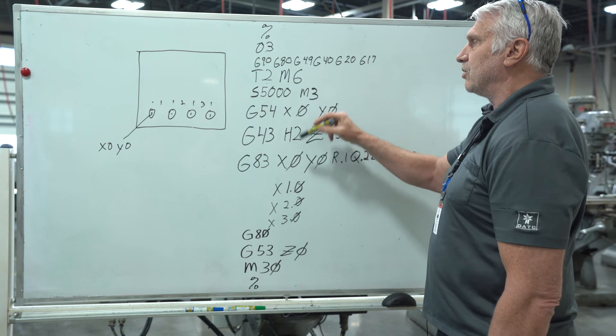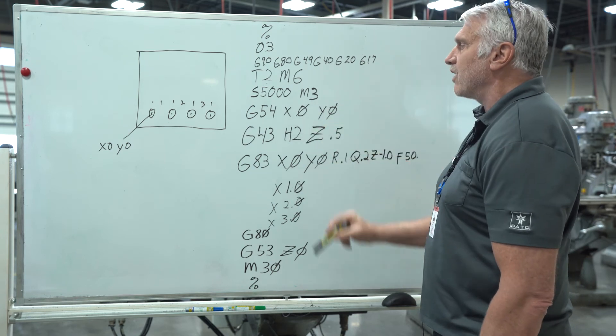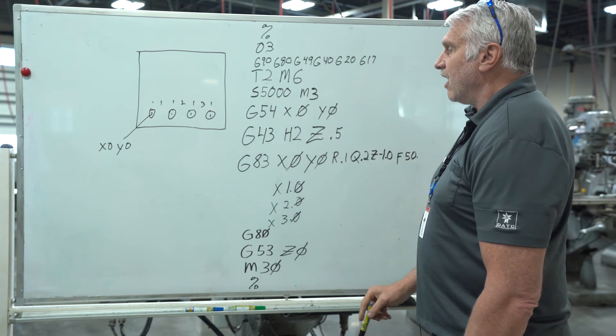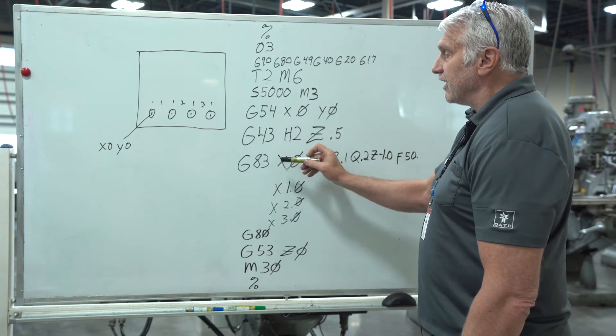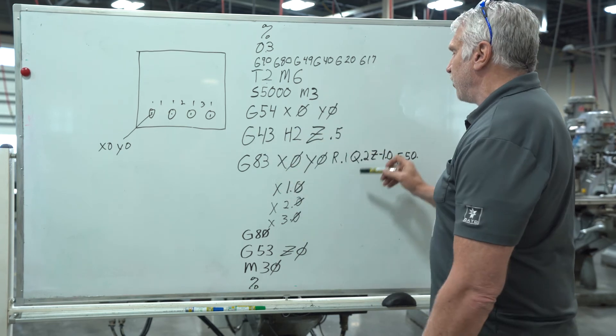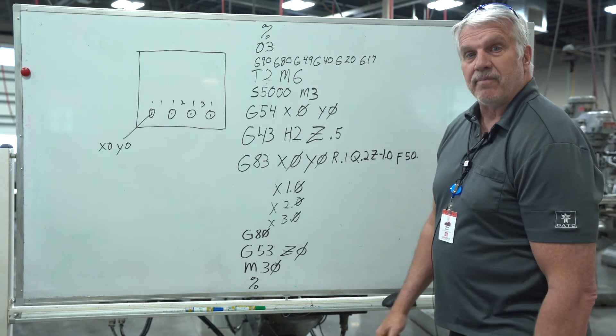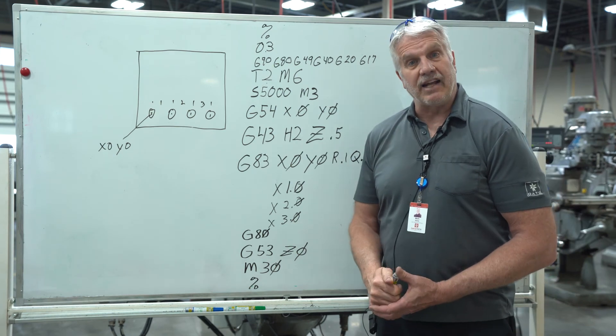Our safety line, call up the tool, turn on the spindle, call up our work offset, a work coordinate, call up our height offset, tell it we're doing a drilling cycle which is a pecking cycle. Put a Q in there and the Z depth and everything remains the same. That's how you do a pecking cycle.